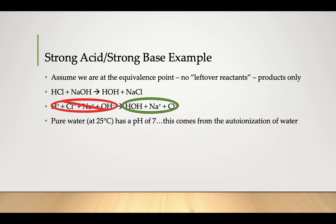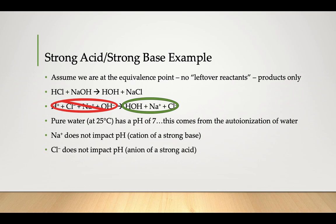Pure water at 25 degrees has a pH of 7. That pH comes from the autoionization of water. Both the sodium and the chloride ions don't impact the pH because they're the cations and anions of strong acids and bases. So the pH at the equivalence point for a strong acid or base is going to be 7.